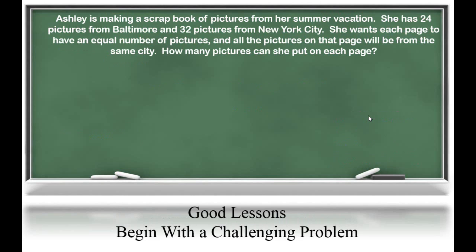Let's look at some real-world problems that students might encounter. Ashley is making a scrapbook of pictures from her summer vacation. She has 24 pictures from Baltimore and 32 pictures from New York City. She wants each page to have an equal number of pictures, and all the pictures on that page to be from the same city. How many pictures can she put on each page? We know she has 24 pictures from Baltimore and 32 from New York City, and she wants to divide them into equal groups. In our plan, we're going to find the common factors of 24 and 32.